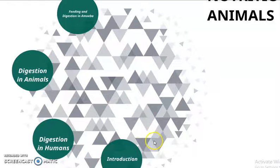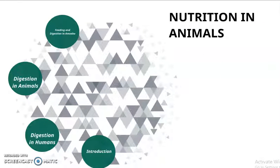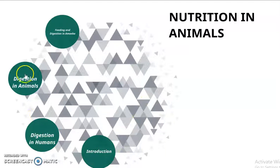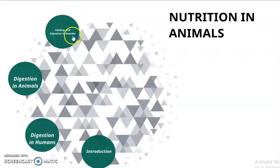Hello everyone, today we are going to learn about the topic Nutrition in Animals, Chapter 2. We will be dealing with an introduction, digestion in humans, digestion in different animals, as well as the feeding and digestion in the unicellular organism, namely amoeba.